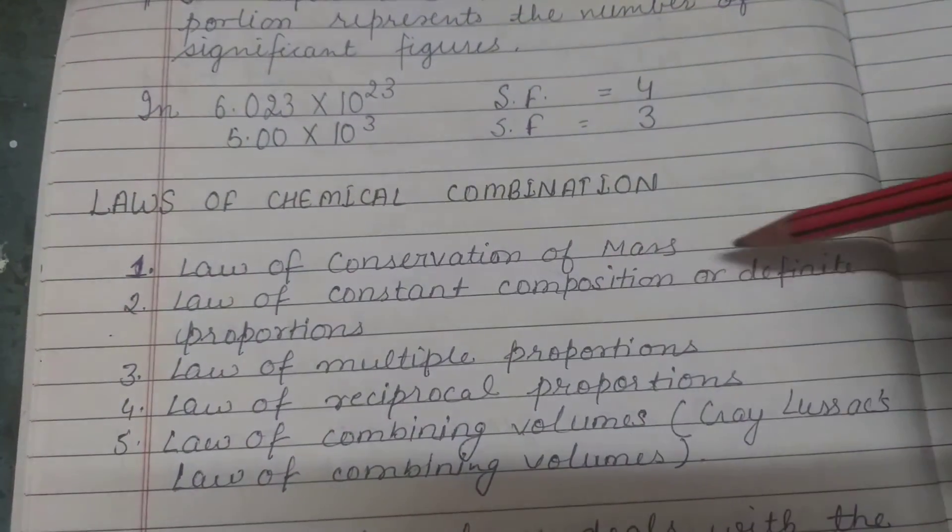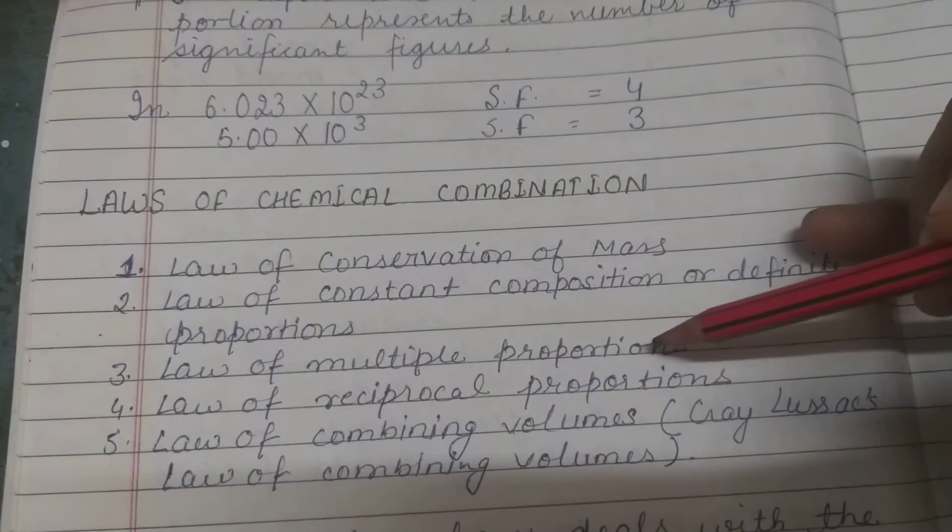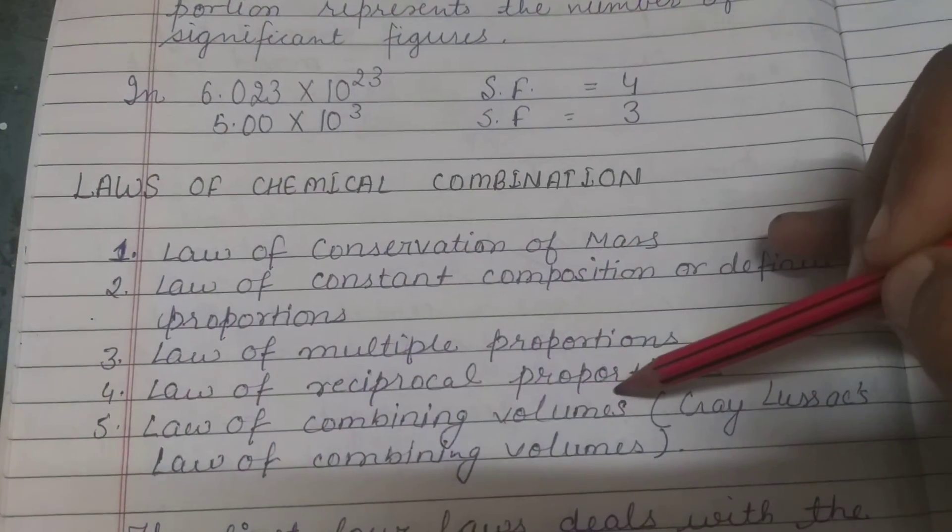Five laws: 1) Law of conservation of mass, 2) Law of constant composition and definite proportions, 3) Law of multiple proportions, 4) Law of reciprocal proportions, 5) Law of combining volumes.